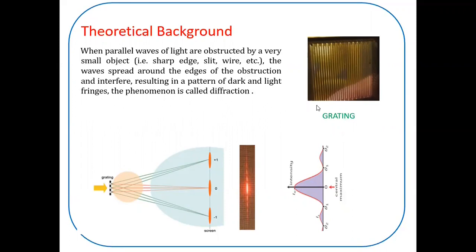In our experiment, we are using grating as an object. It is nothing but a plain glass plate on which lines are drawn with the help of diamond tip. Distance between two consecutive lines is the grating constant. It consists of n number of slits based on number of lines formed.